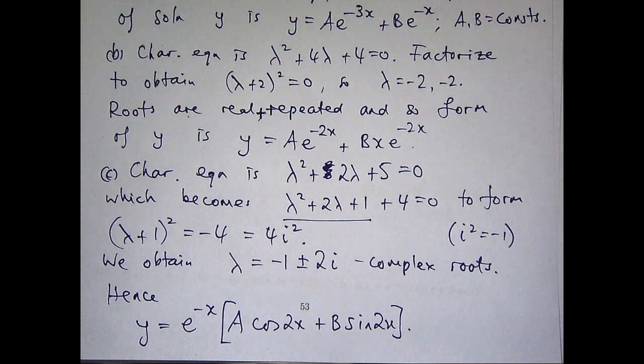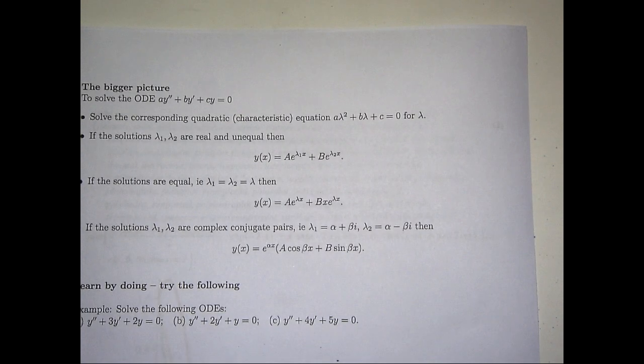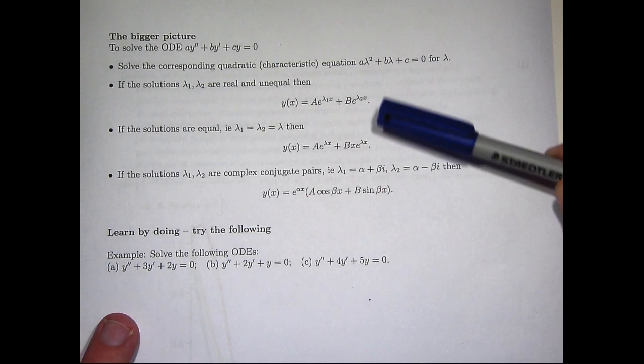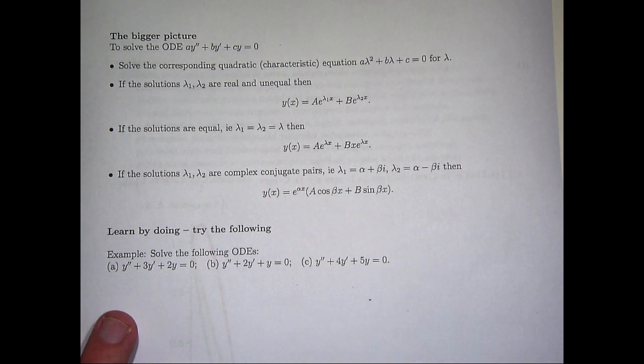So there are three basic cases. Three basic equations. Now let's just briefly look at the bigger picture, and then we'll talk about the modelling of each of these three equations. So to compute the general solution to this second-order ODE, what you do is you form the characteristic equation, the quadratic equation associated with the problem, and then you solve that. Now depending on what kind of roots you have, you'll get different forms of the solution.